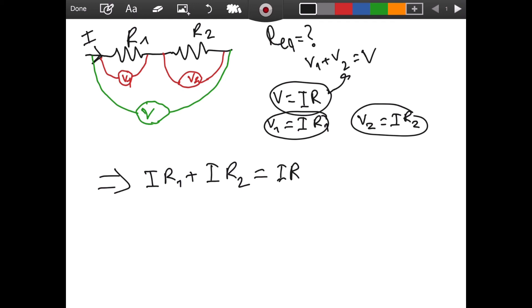And of course, this R right here is the equivalent resistance. Maybe we should specify it here as well. So you see that if we factor the left side, we get this and now we divide by I so that we have R equivalent is equal to R1 plus R2.